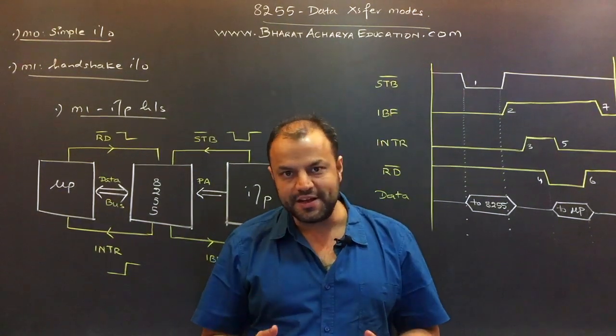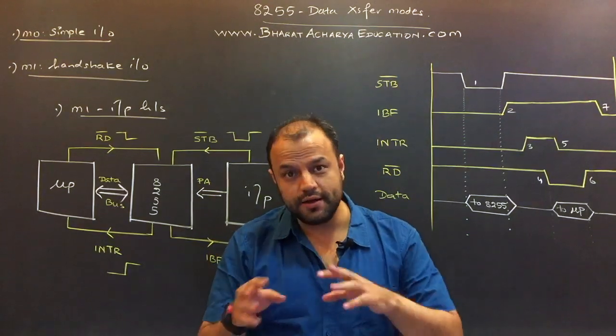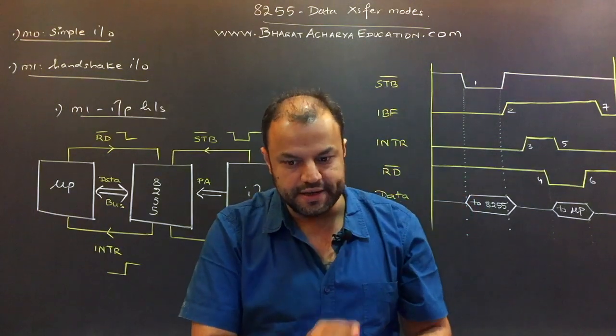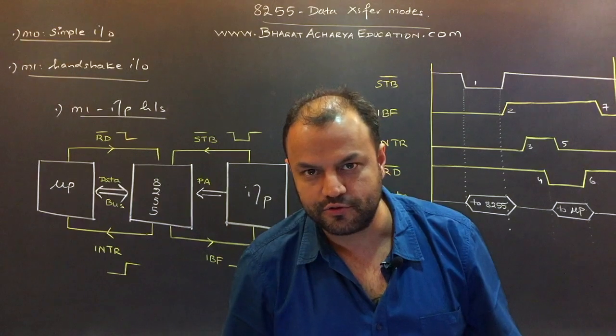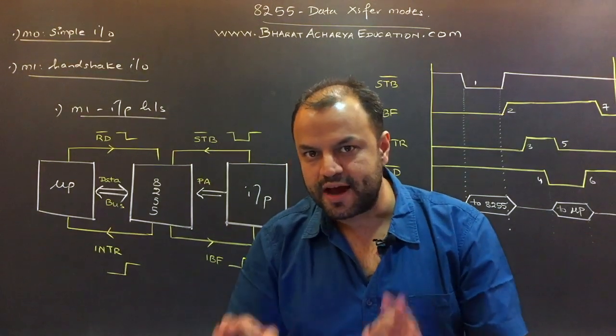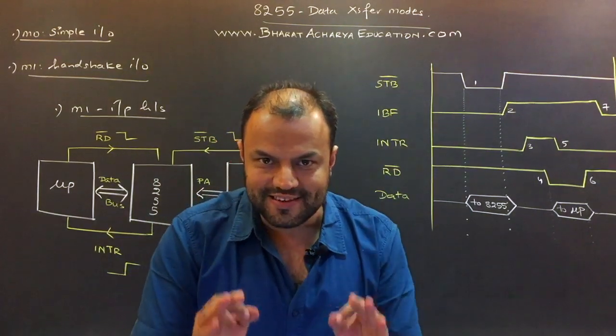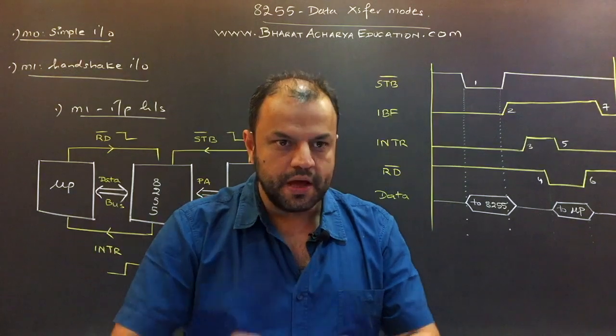Mode 1 is handshaking I/O. Mode 2 is called bidirectional handshaking I/O. Now here, let me just give you an idea: both mode 1 and mode 2 do handshaking. Who does handshaking better? Nothing of that sort. Both do the same handshaking. Is that clear? People have weird ideas about mode 2.